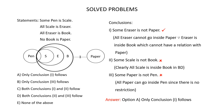In this question, there are 4 statements and 3 conclusions. Let's find out which of the given conclusions follow from the logic in the statements. The statements are: Some pen is scale, all scale is eraser, all eraser is book, no book is paper. Let's draw a Venn diagram for these statements.